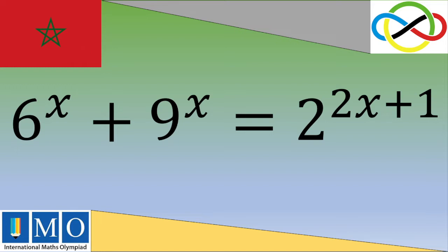6 power x plus 9 power x equals 2 power 2x plus 1. If you want to give it a try, please pause the video. Otherwise, let's see the solution.